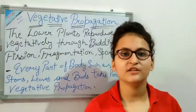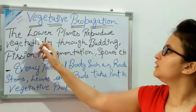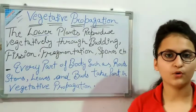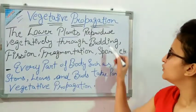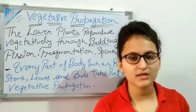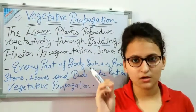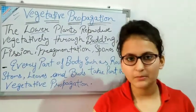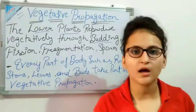The lower plants are vegetatively reproduced through budding. We can cut the buds and place them, and then there will be a new plant.